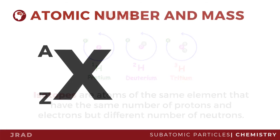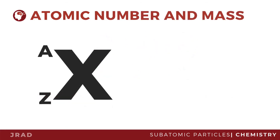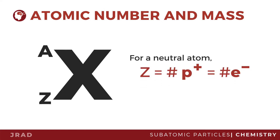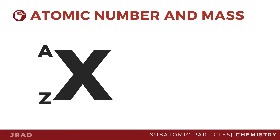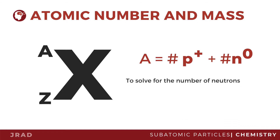Isotopes are identified by their mass number. For a neutral atom, the atomic number is equal to the number of protons, which is also equal to the number of electrons. The mass number of an atom is equal to the sum of the number of protons and neutrons. So, if you want to find the number of neutrons in an atom, you can simply subtract the atomic number from the mass number.